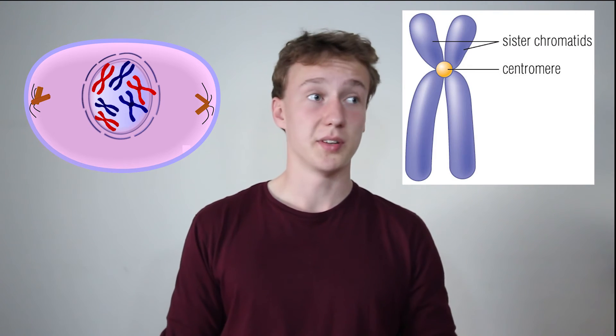In prophase, the DNA — two sets of complete DNA inside the nucleus — super coils and condenses into things called sister chromatids. This is the only time in the cell life cycle where we can actually see the DNA. Once the DNA is condensed into sister chromatids, which are groups of identical chromosomes joined together at the centromere, the nuclear membrane disintegrates, and that's the end of prophase.